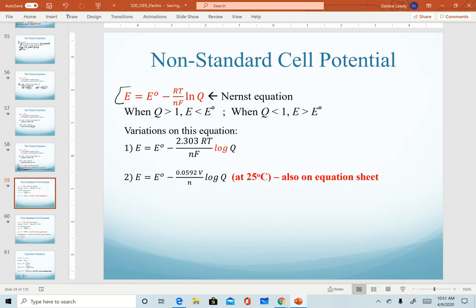So again, here we have our original version of the Nernst equation. This is on your equation sheet. And I have relationships listed here to help you predict, but I don't recommend trying to memorize those. However, I do want to mention that there are two variations on our Nernst equation. In the first variation, what we've done is taken the natural log quantity and converted it into log base 10. To do that, we multiply by a factor of 2.303.